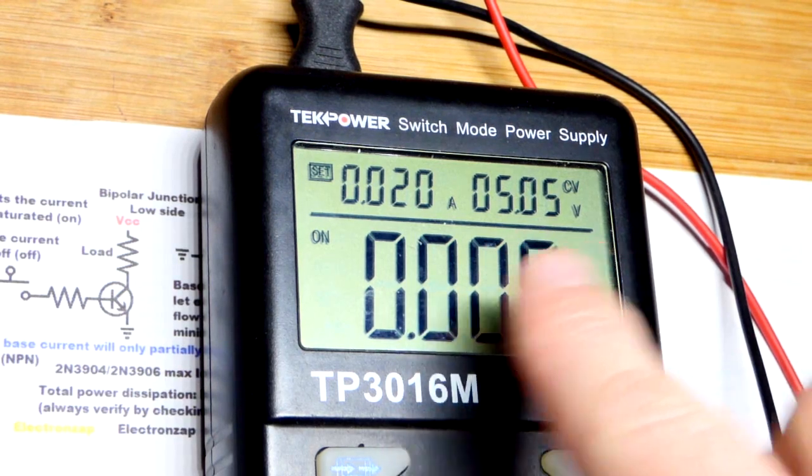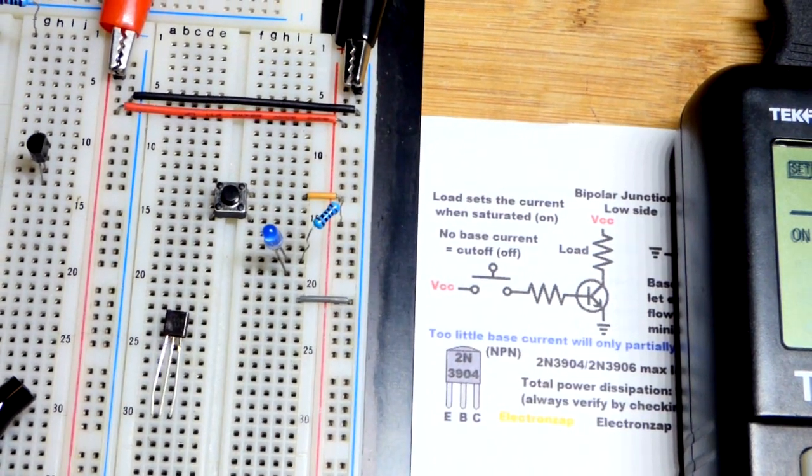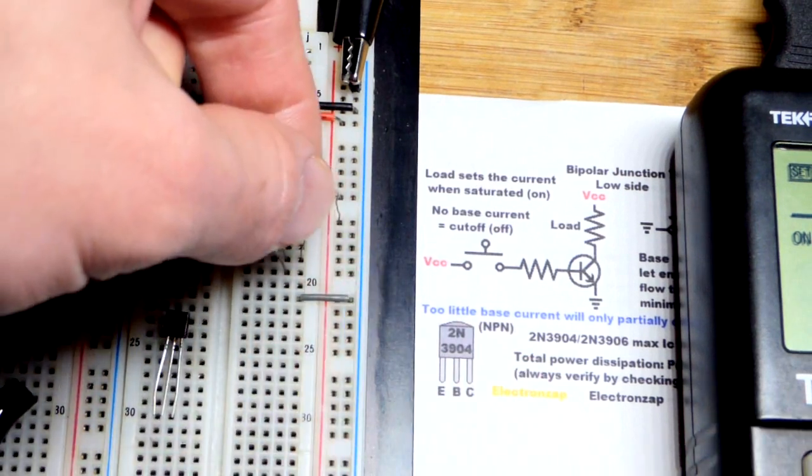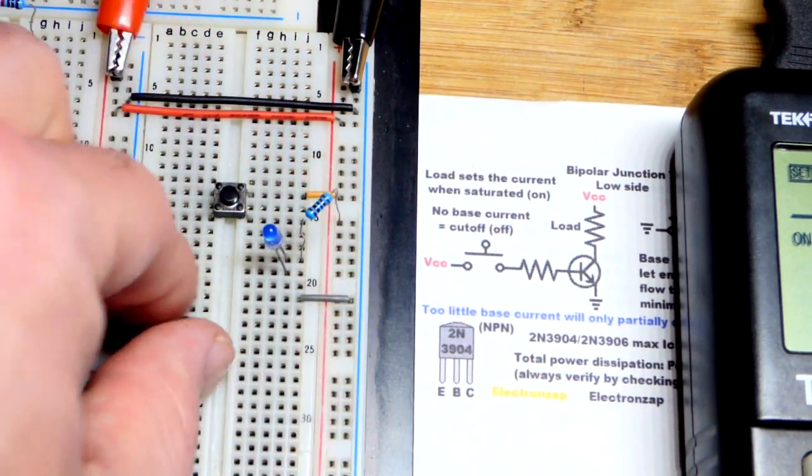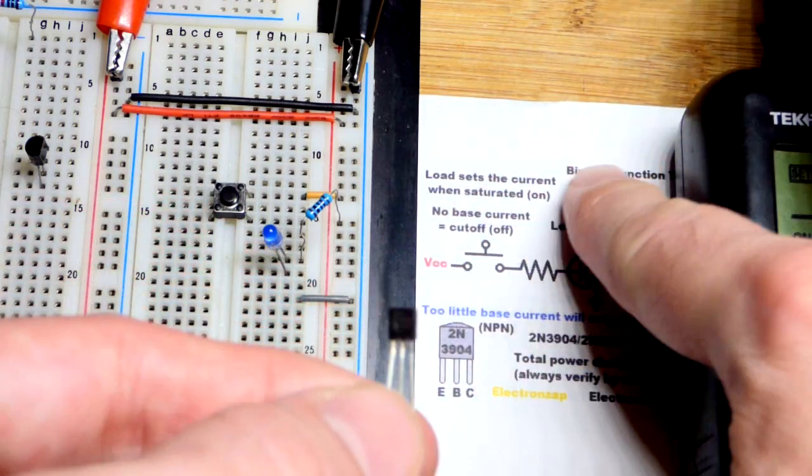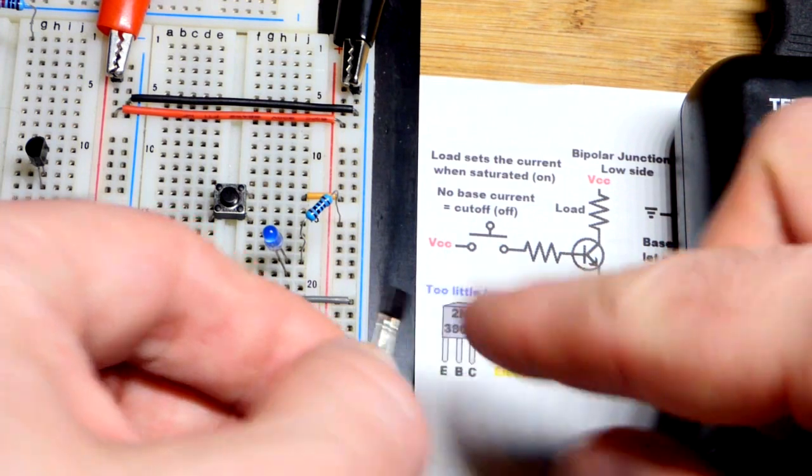We have the power supply set to 5 volts and the output is on. We come to the breadboard and for my load, I decided I will put an LED in series with a 1 kilo ohm resistor to the positive supply. It'll only let through about a couple milliamps of current.